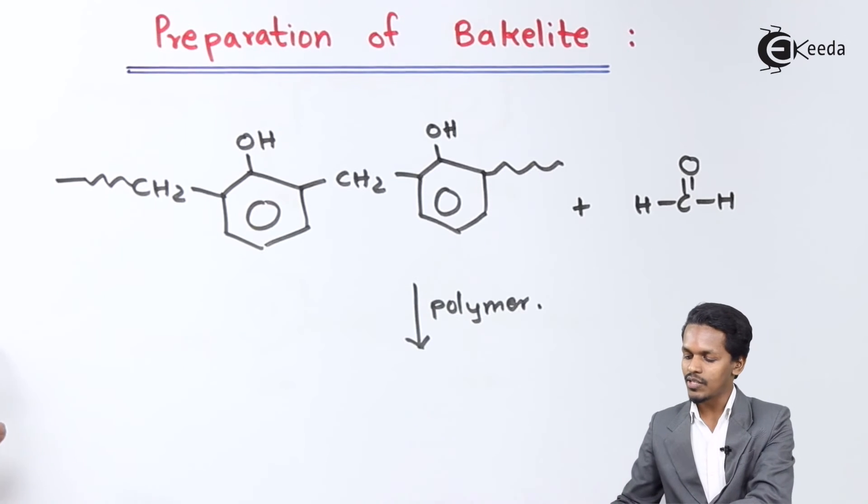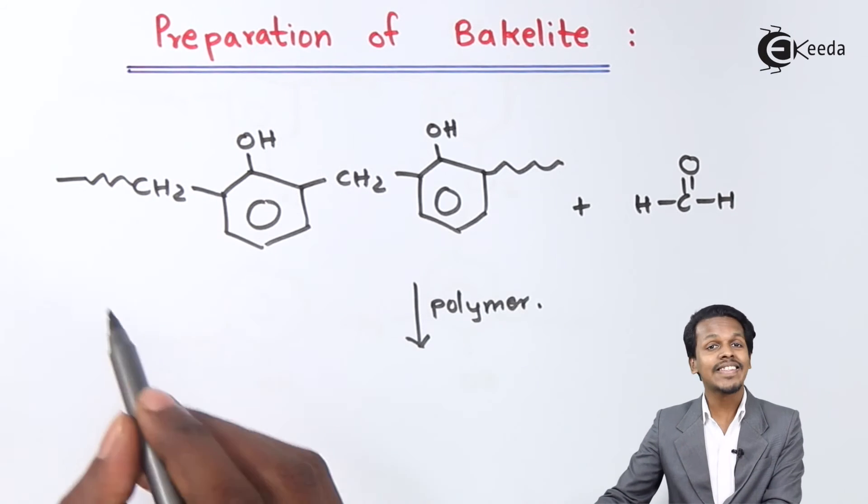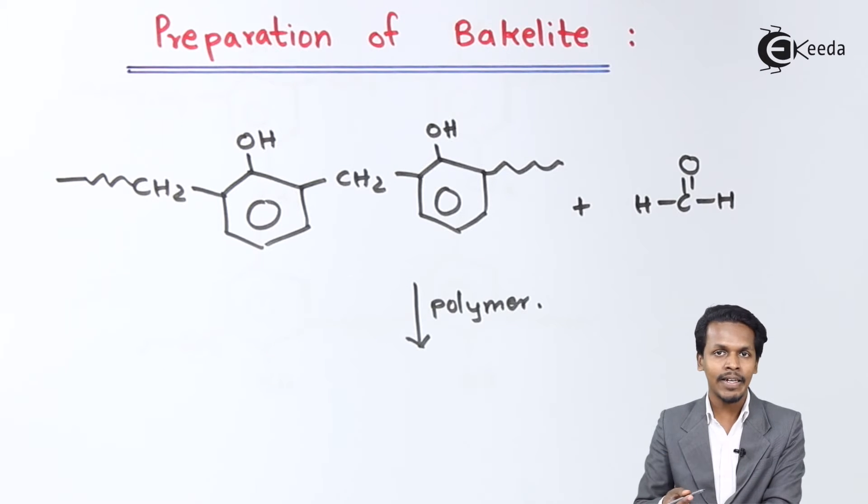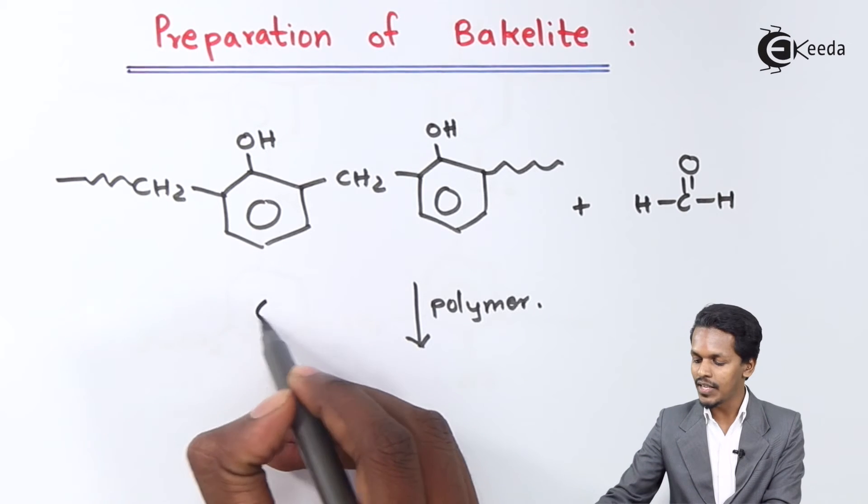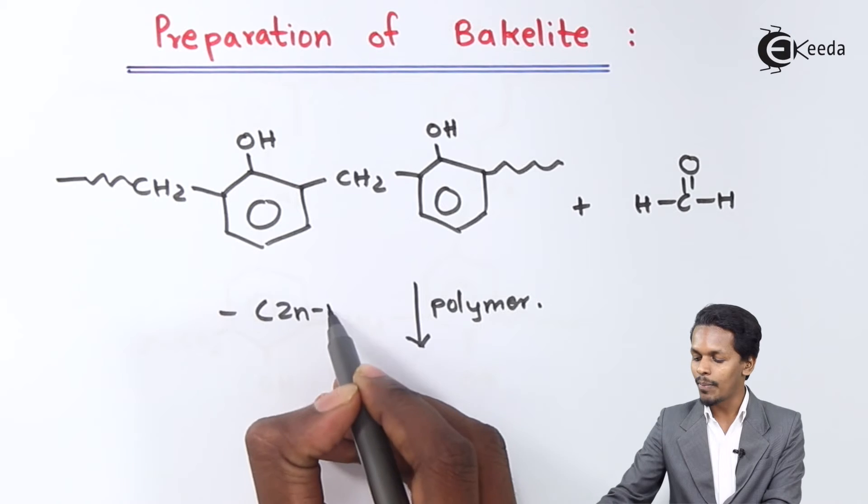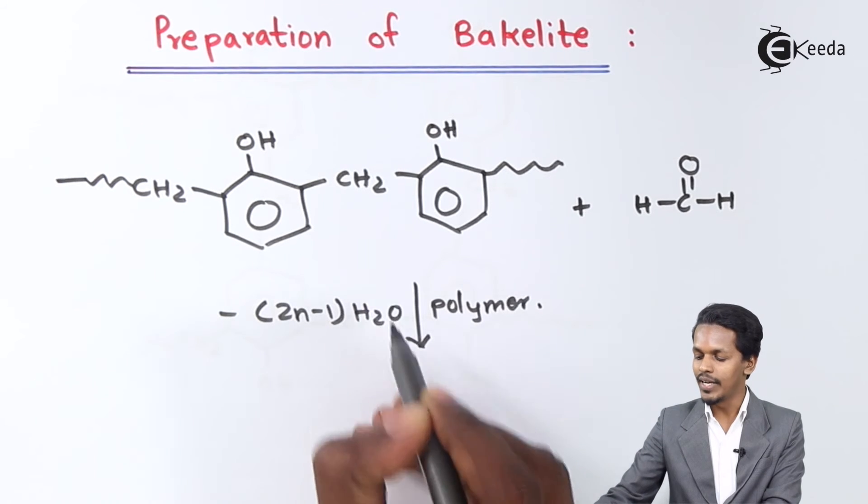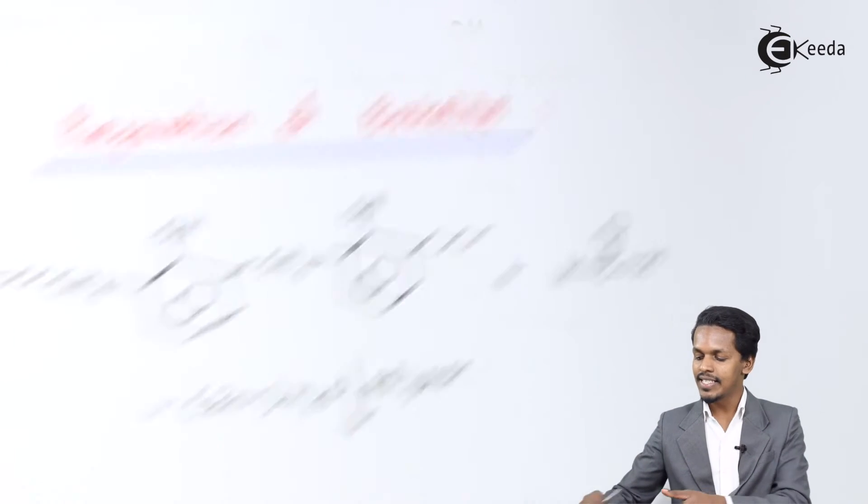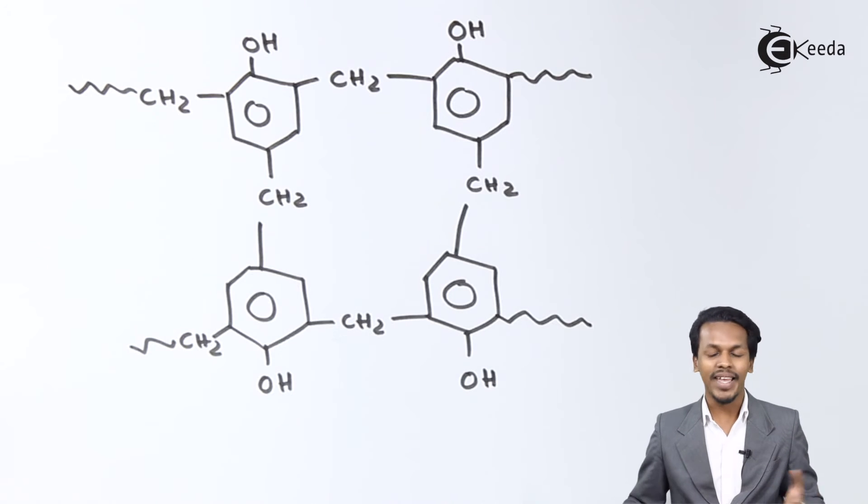In this reaction, if we consider n moles of linear Novolac, we get (2n-1) moles of H2O eliminated, and this is the structure of Bakelite.